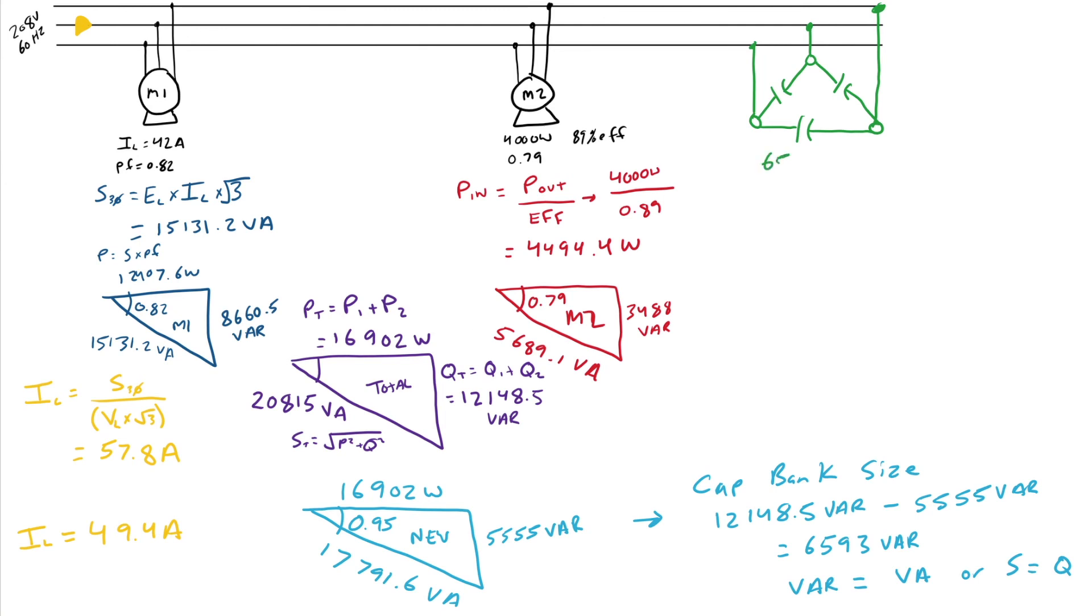So I'm going to come up here, write that down, 6,593 VAR. Okay, using the same formula as before, I can determine that I need my line current here, my line current, I line to the capacitor to be 18.3 amps.